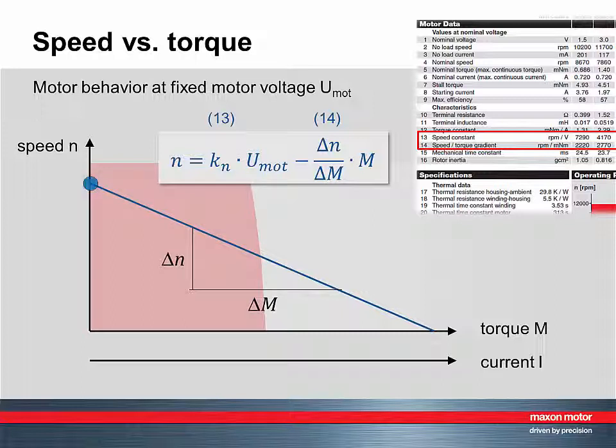First of all, let's start at the left. This is where torque is zero, operation without torque, which is called no load operation. Here the speed is highest. The more torque the motor has to produce, the higher the required load, the lower the speed.